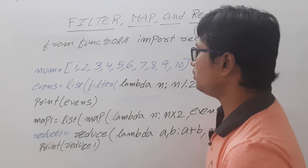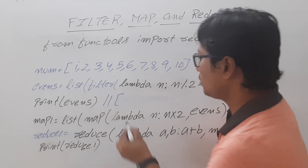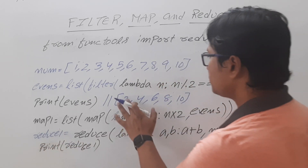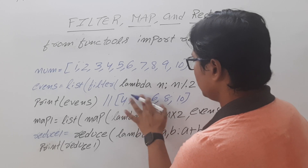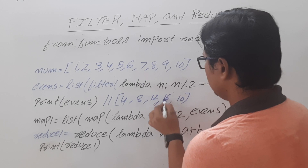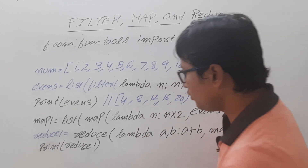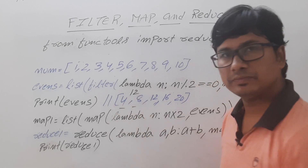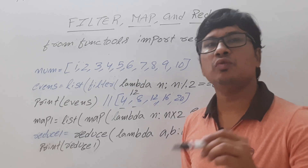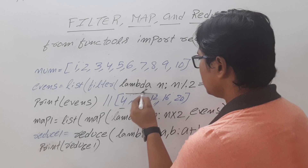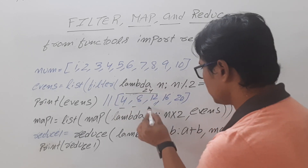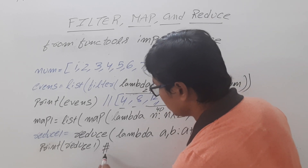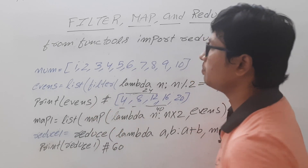Looking at the whiteboard summary: first you get even numbers as 2, 4, 6, 8, 10. When you apply map, these values become 4, 8, 12, 16, 20. Then applying reduce: 4 + 8 = 12, 12 + 12 = 24, 24 + 16 = 40, 40 + 20 = 60. So the final result stored in reduce1 and displayed is 60. For better understanding I will now execute all this in Jupyter Notebook.